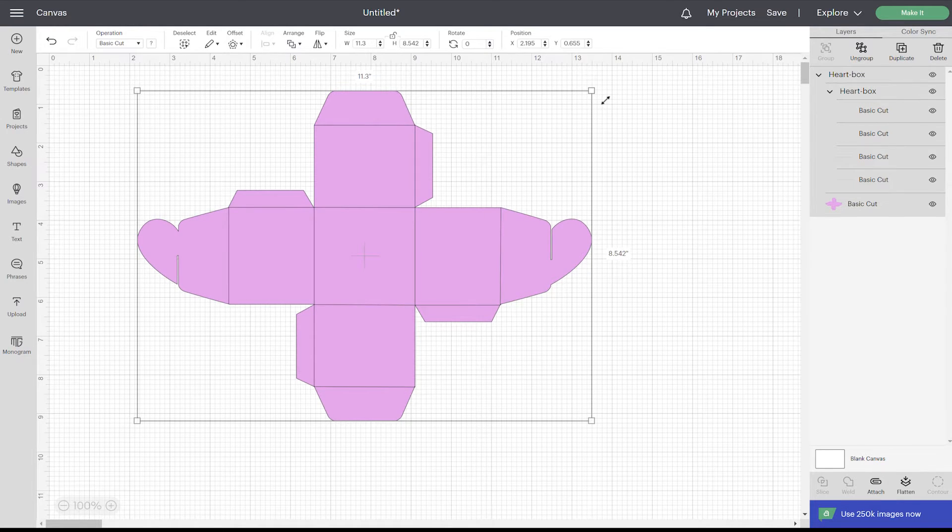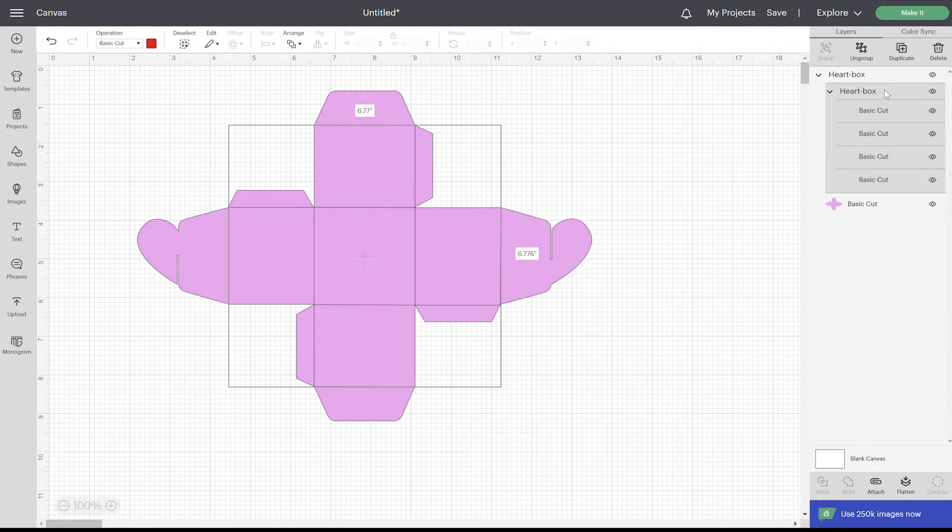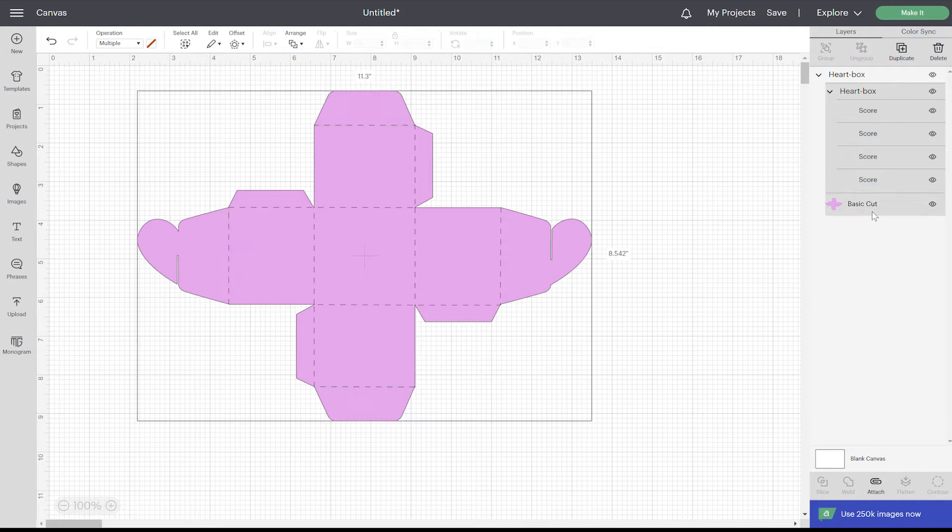Just resize it and make sure it stays on one piece of cardstock. Right here these are your score lines. You're going to go into your basic operation and change those to your score lines. If you don't have a scoring tool then delete these layers because you don't want them to cut there. You can just fold it by hand.